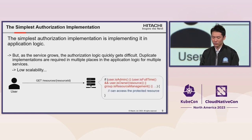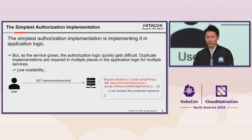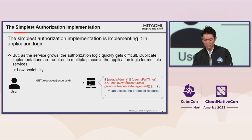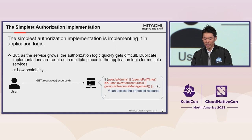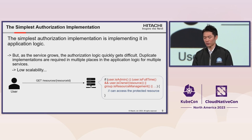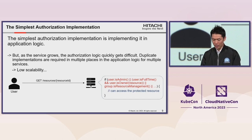However, as the service grows, the authorization logic quickly gets difficult. For example, you may need to allow access to the protected resource not only for administrators, but also for full-time workers or resource management group members. In this case, the number of conditions in the if statement increases dramatically. Also, in many cases, duplicate implementations may be required in multiple places in the application logic or across multiple services. This is not a scalable authorization implementation. Therefore, some kind of ingenuity is required to make authorization implementation scalable.